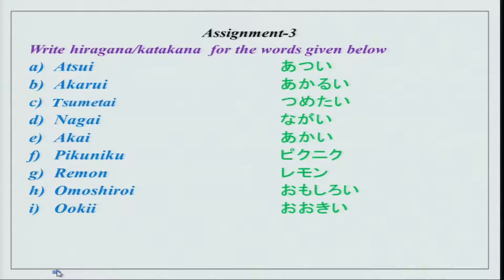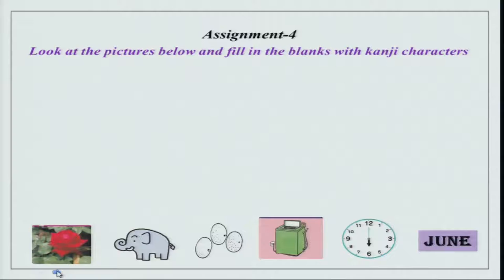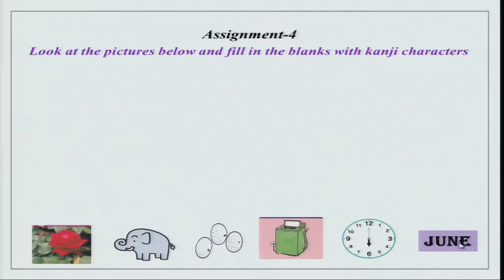Omoshiroi, ooki, orenji. Now the fourth assignment is: look at the pictures below and fill in the blanks with kanji characters. The pictures are given at the bottom. You have a rose, an elephant, some oranges, a washing machine, a clock, and June written over here.